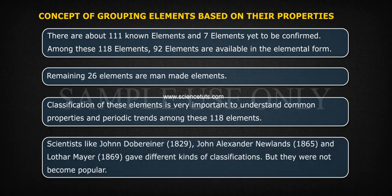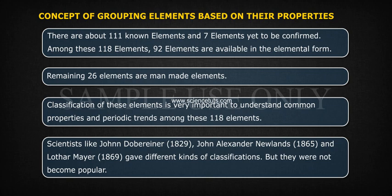Scientists like John Dobreiner (1829), John Alexander Newlands (1865), and Lothar Mayer (1869) gave different kinds of classifications, but they were not widely accepted.